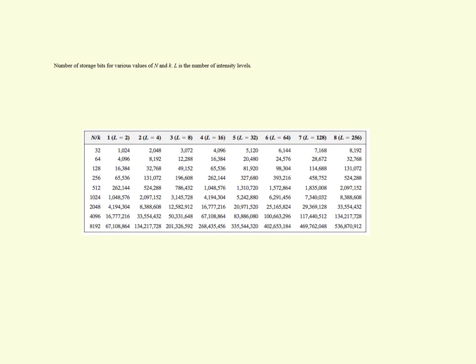Here showing different number of bits and corresponding bits to represent a particular intensity level. If n equals 32 and k equals 1, then the image requires 1024 bits. If n equals 8129 and k equals 8 bits, the same image will require 536,870,912 bits. As we increase the number of bits to represent particular intensity, image detail will be more, and more bits are required to represent the same image.